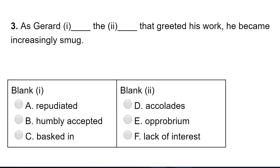I'm on a roll. As Gerard something the something that greeted his work, he became increasingly smug. Smug means pleased with yourself, so he wouldn't humbly accept — that's the opposite. To bask in something is to revel in something, almost arrogantly enjoying it. As Gerard basked in the accolades — yes, accolades means praise. As Gerard basked in and enjoyed the praise that greeted his work, he became increasingly smug.